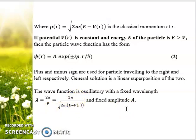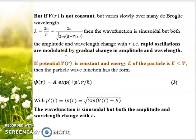Now consider the case when V(r) is not constant and it varies over a certain range of the de Broglie wavelength given by λ = 2π/p. In such cases, wave functions will remain sinusoidal but both the amplitude and wavelength will change with r. We will have rapid oscillations modulated by gradual change in amplitude and wavelength.